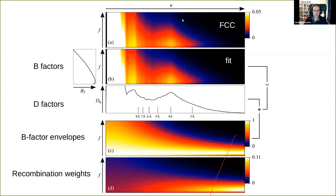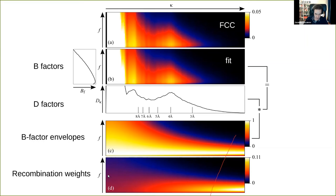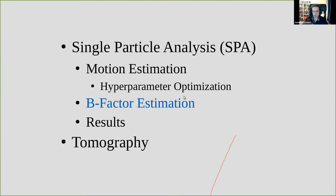The FCC, where the horizontal axis represents frequency and the vertical axis represents frame index, shows that high frequencies decay over time as expected, while the very first frames are also not as good due to more disordered motion. The fit is a product of Gaussian envelopes corresponding to the B-factors: good B-factors produce flat envelopes, while bad ones decay more rapidly. These envelopes are multiplied by d-factors — nuisance parameters describing how much signal there is in each frequency band. We then normalize the envelopes so they sum to one, giving the actual recombination weights: low frequencies are taken from all frames roughly equally, while very high frequencies are only taken from the best frames. Applying these weights gives recombined frames that maximize the signal-to-noise ratio.